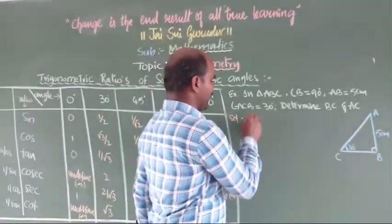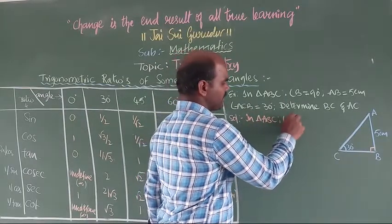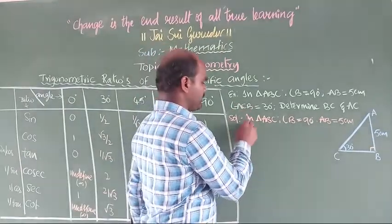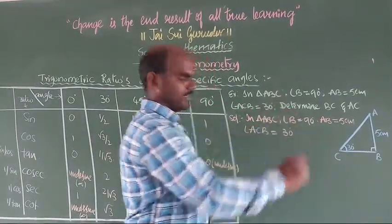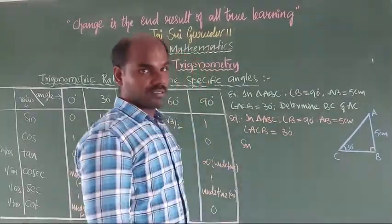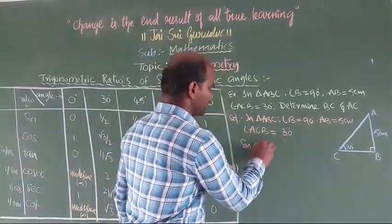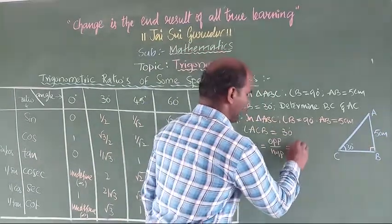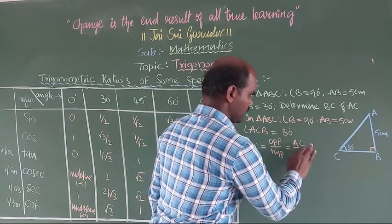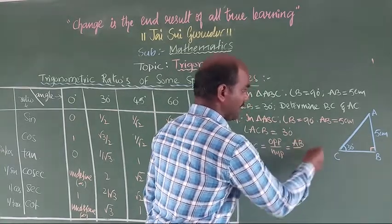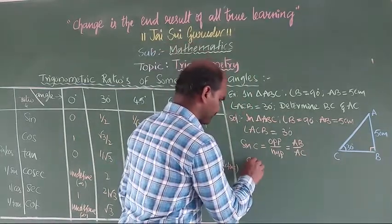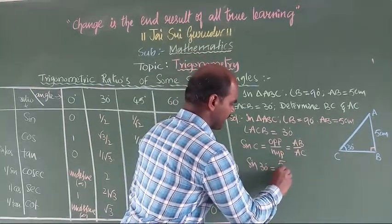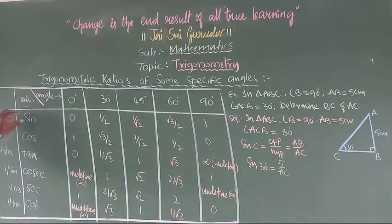In triangle ABC, angle B is equal to 90 degrees, AB is equal to 5 centimeters, and angle ACB is equal to 30 degrees. So now, sin C equals opposite by hypotenuse, which is AB by AC. So sin C equals sin 30 degrees, which equals 5 by AC. From the table, sin 30 degrees equals 1 by 2.